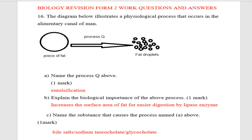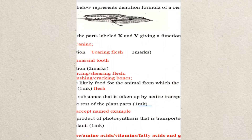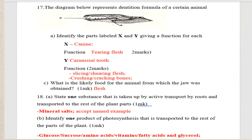Part c: name the substance that causes the process named in part a above. What substance is used to break fat into small droplets? That substance is bile salts, also called glycocholate.